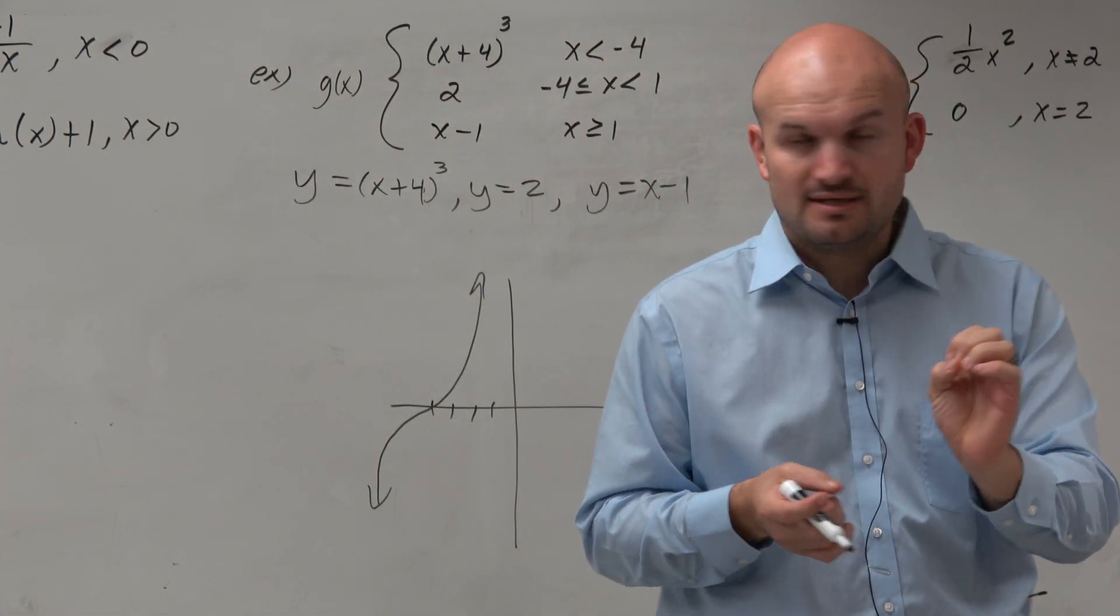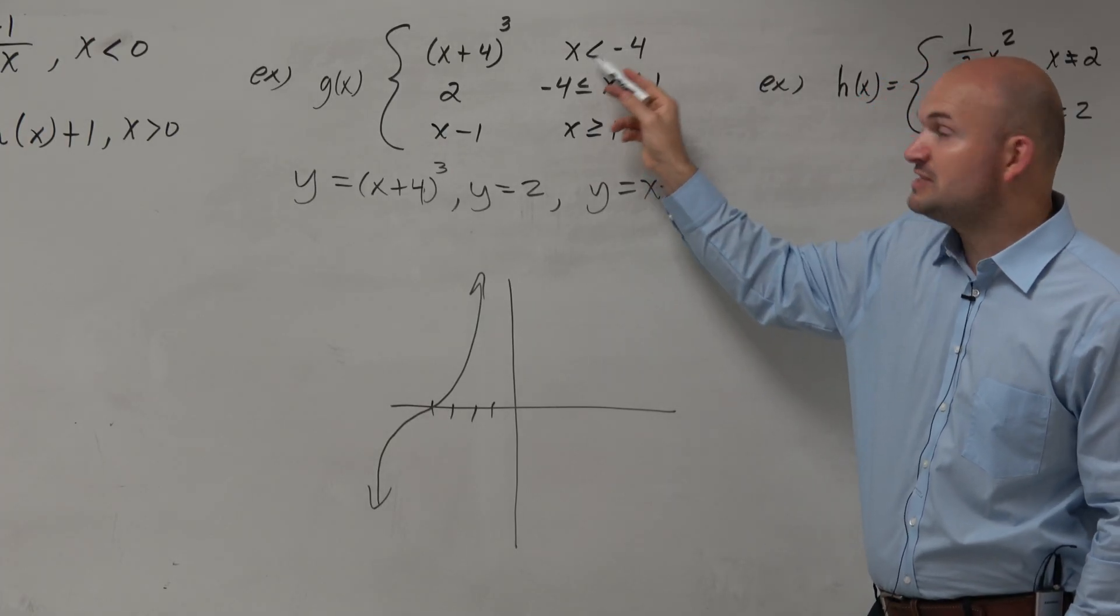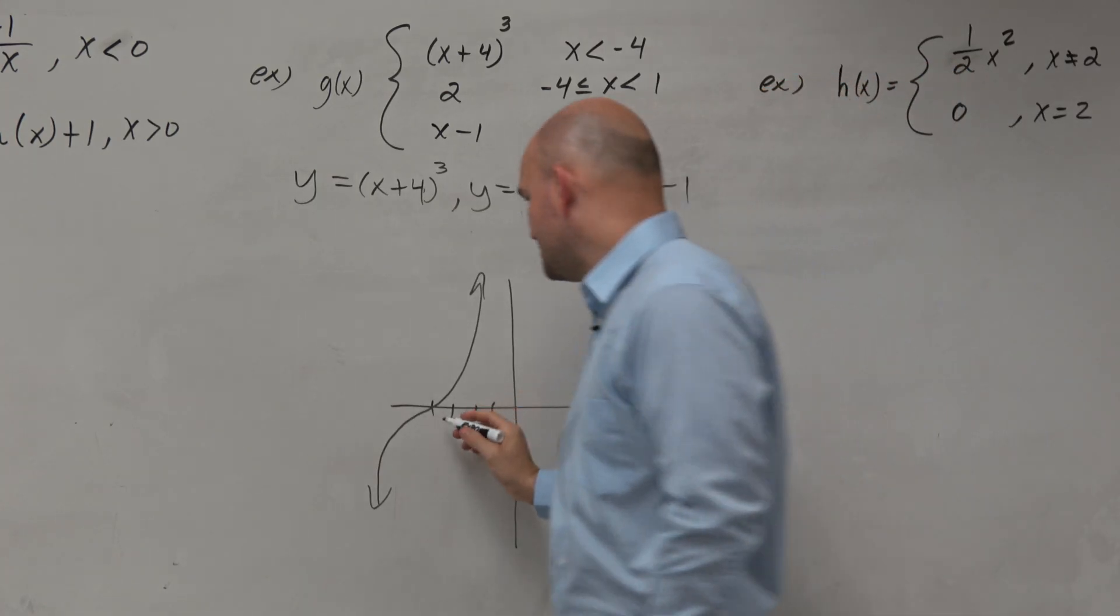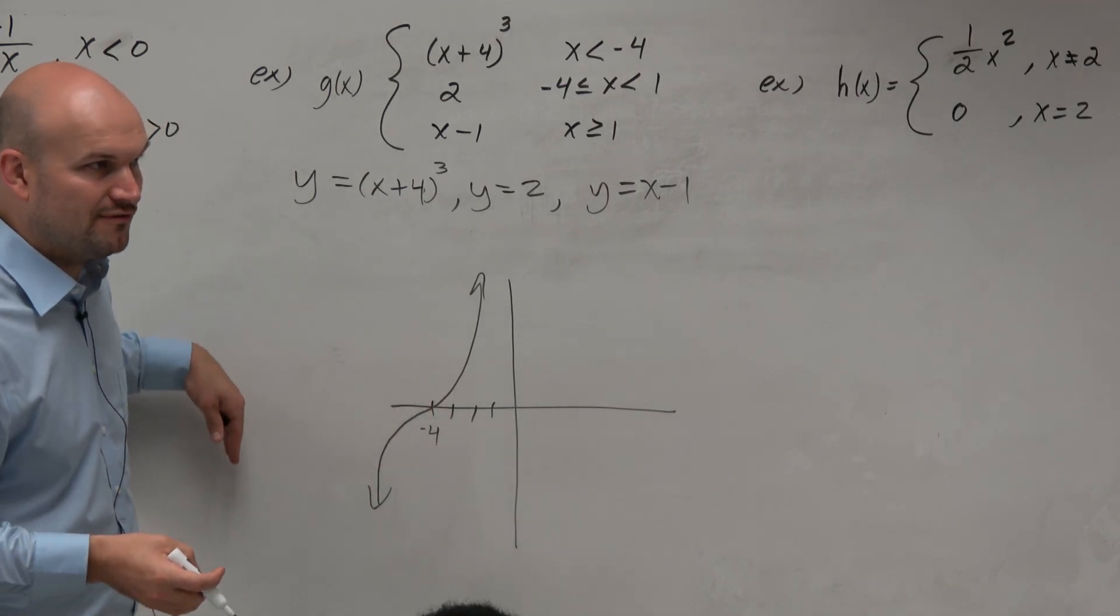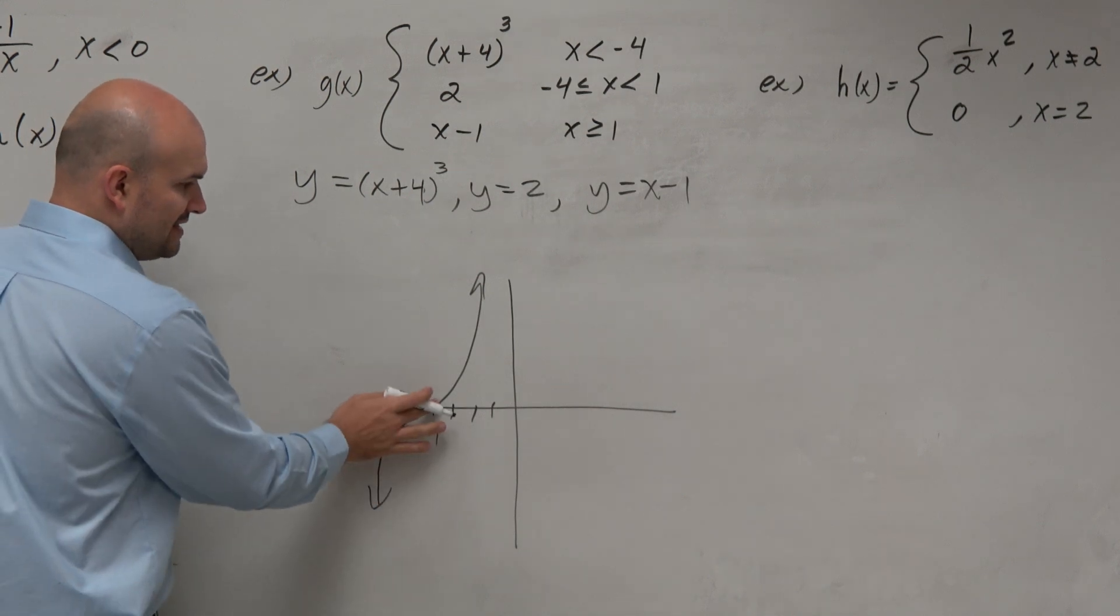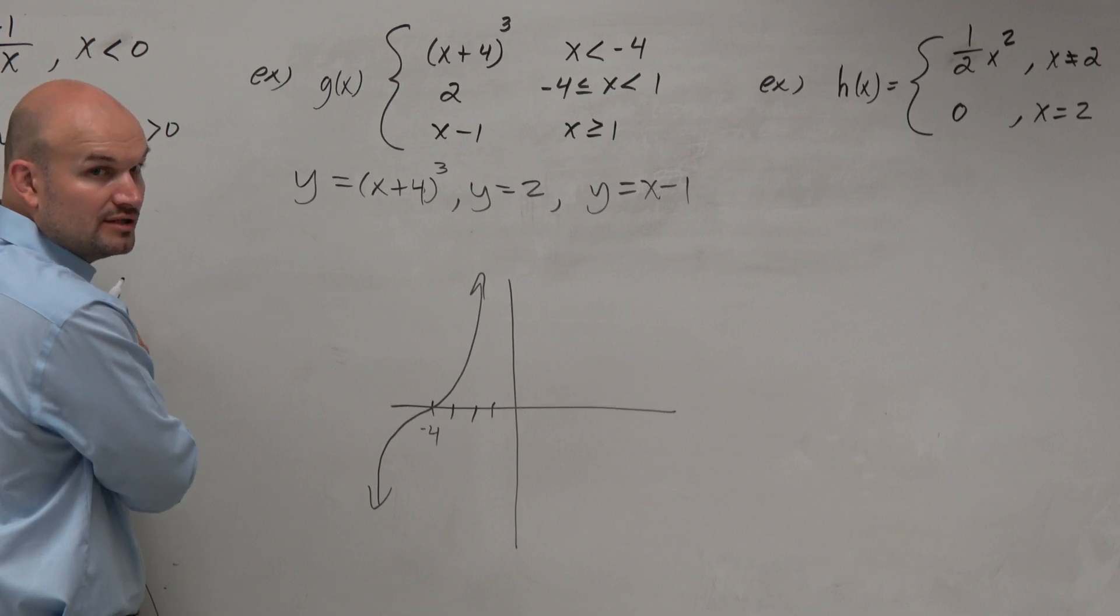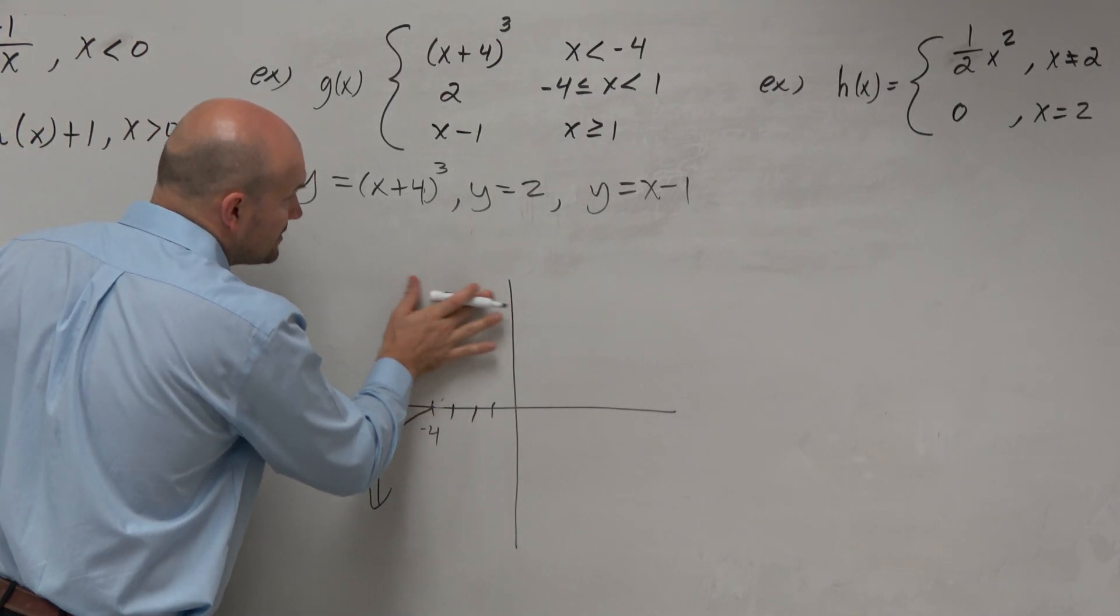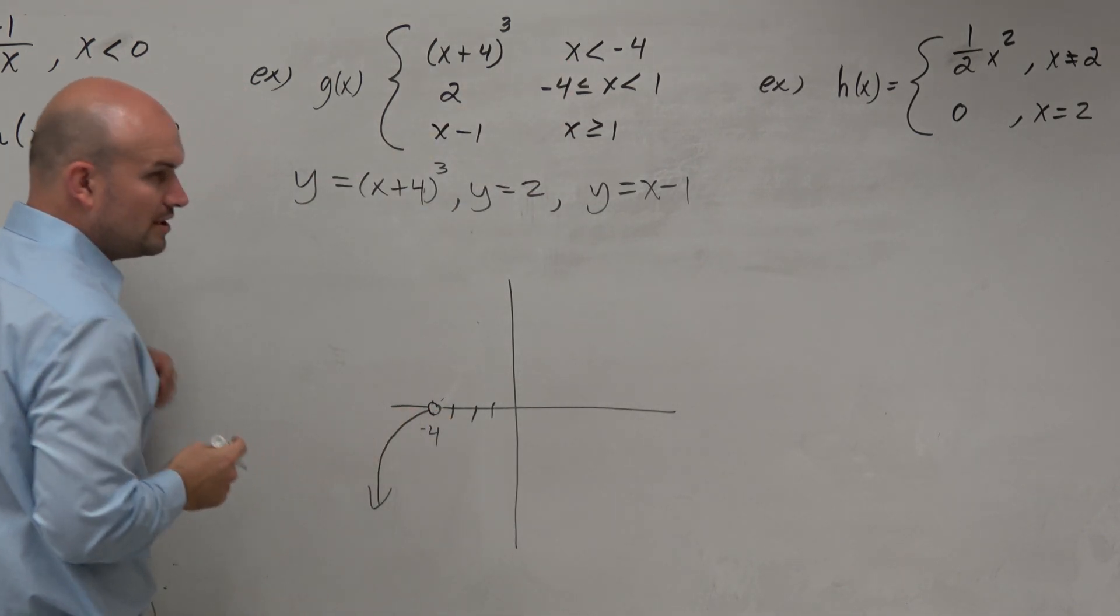now once we've graphed it, we look at the constraints. This function is only true for x values that are less than negative 4. So here's negative 4. The domain is restricted for all values that are less than negative 4. So that means this is not included in the domain of the function. Anything to the right of negative 4 is not included in the domain. So we're just going to erase it. And since x is less than, we know that's an open circle.